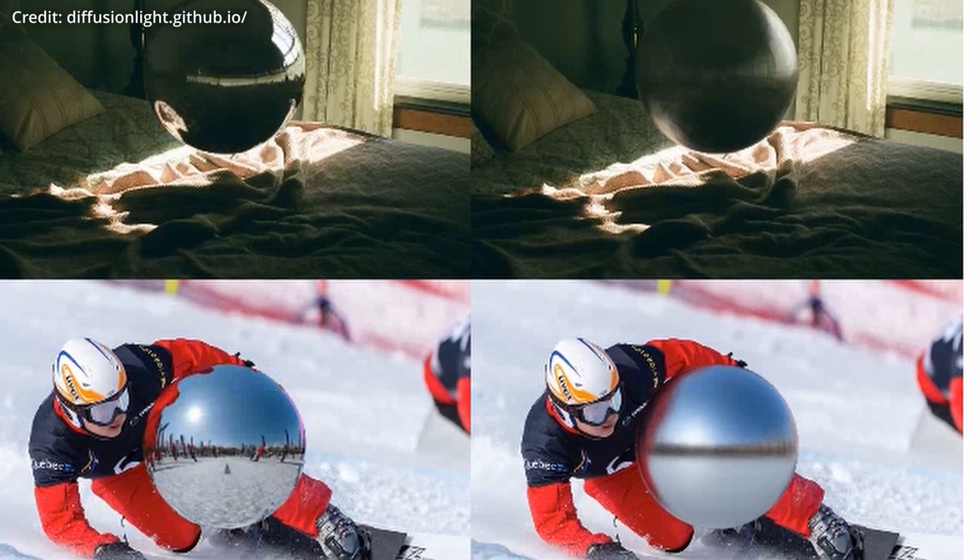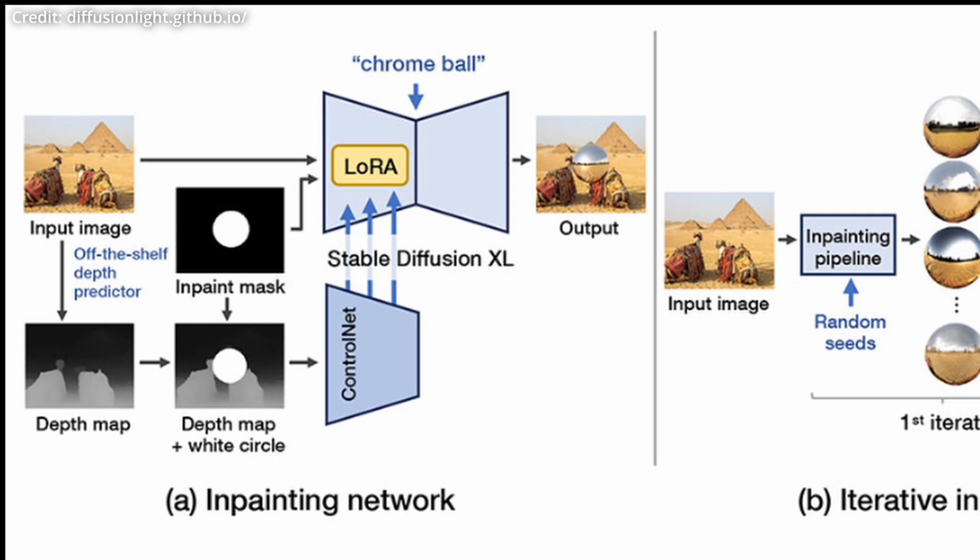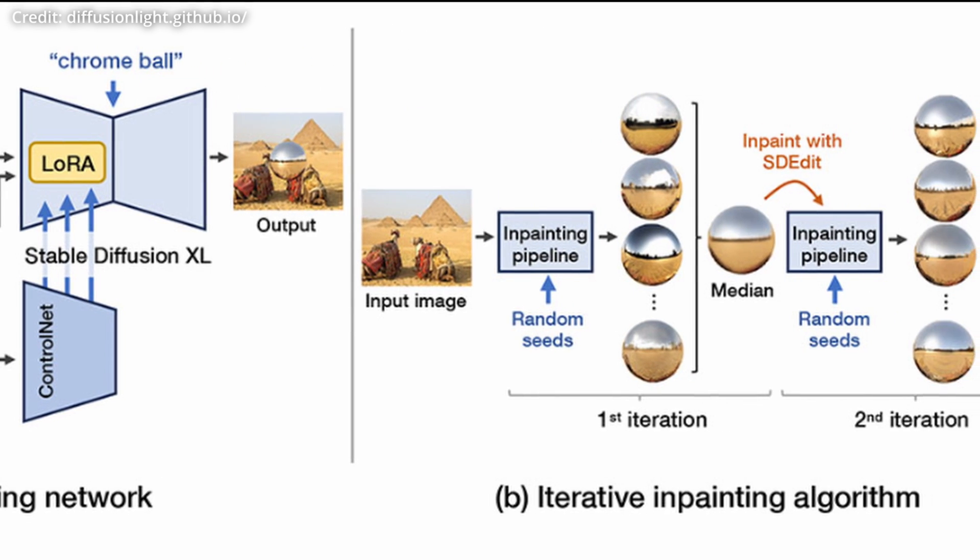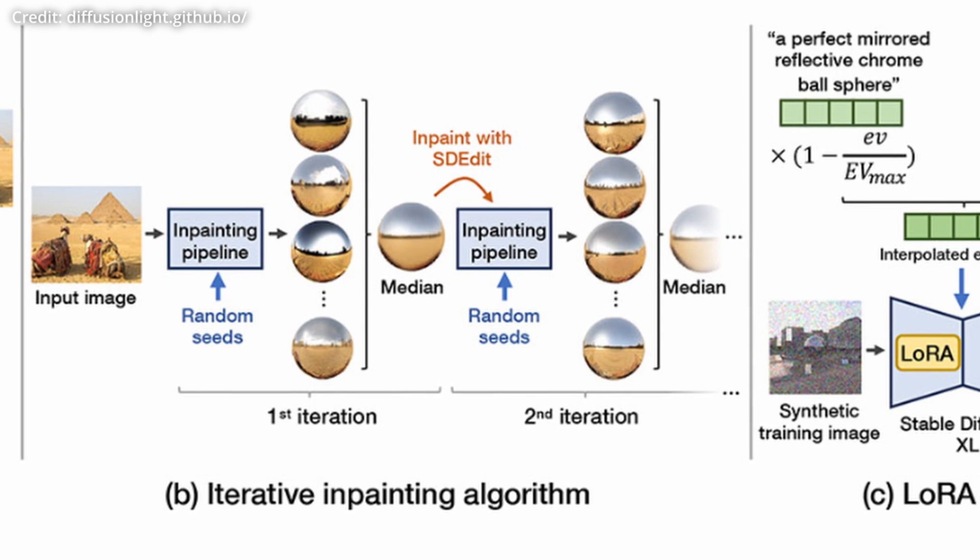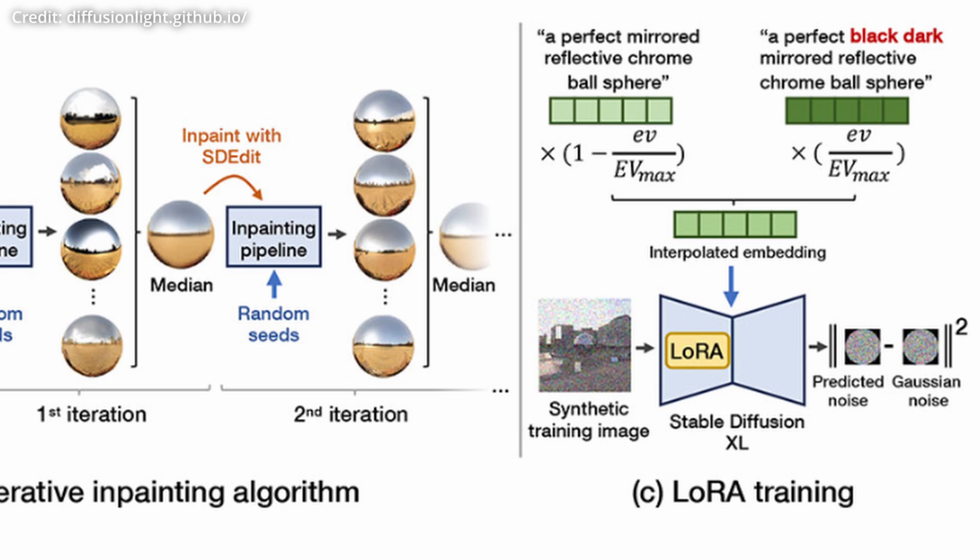Diffusion Light employs Stable Diffusion XL, which has been pre-trained with a vast array of images. This model infers high dynamic range and brightness levels indirectly from underexposed and overexposed images in its training sets. It also uses iterative in-painting to overcome limitations originating from Stable Diffusion XL.